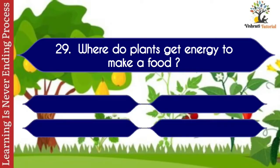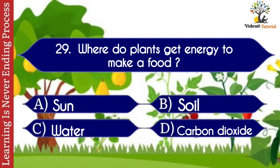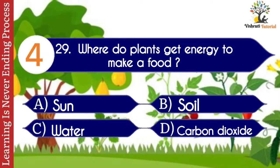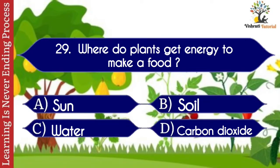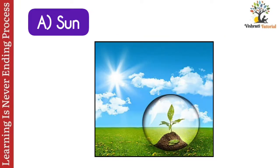Question number twenty-nine: where do plants get energy to make food? Options: A. Sun, B. Soil, C. Water, D. Carbon dioxide. The correct answer is A. Sun. Plants get energy to make food through sunlight.